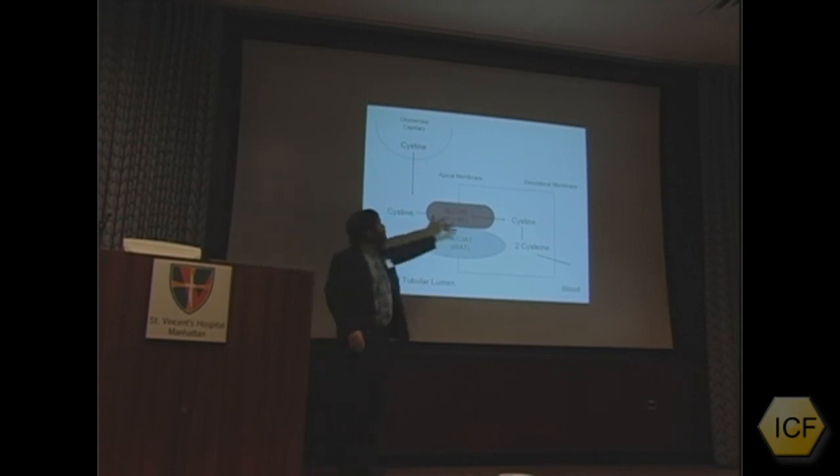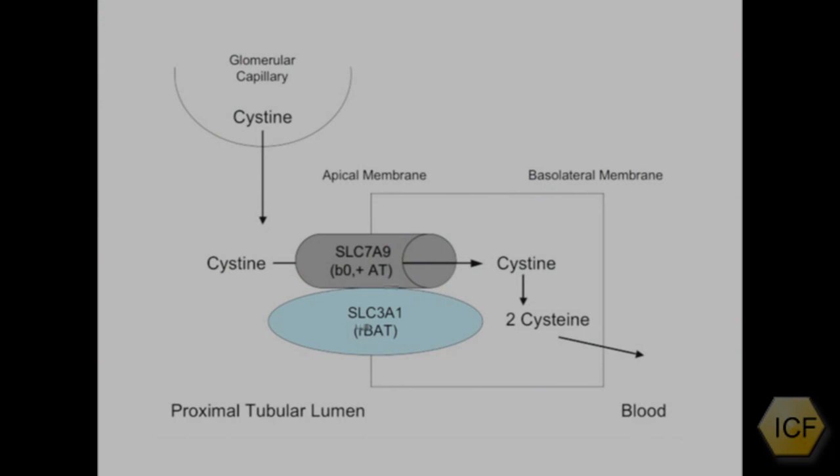The cystine moves through the transporter and into the cell. It's then reduced, it's turned into two cysteine molecules, that disulfide bridge is broken, and these two molecules of cysteine then exit the cell and go into the blood in the peritubular capillary.